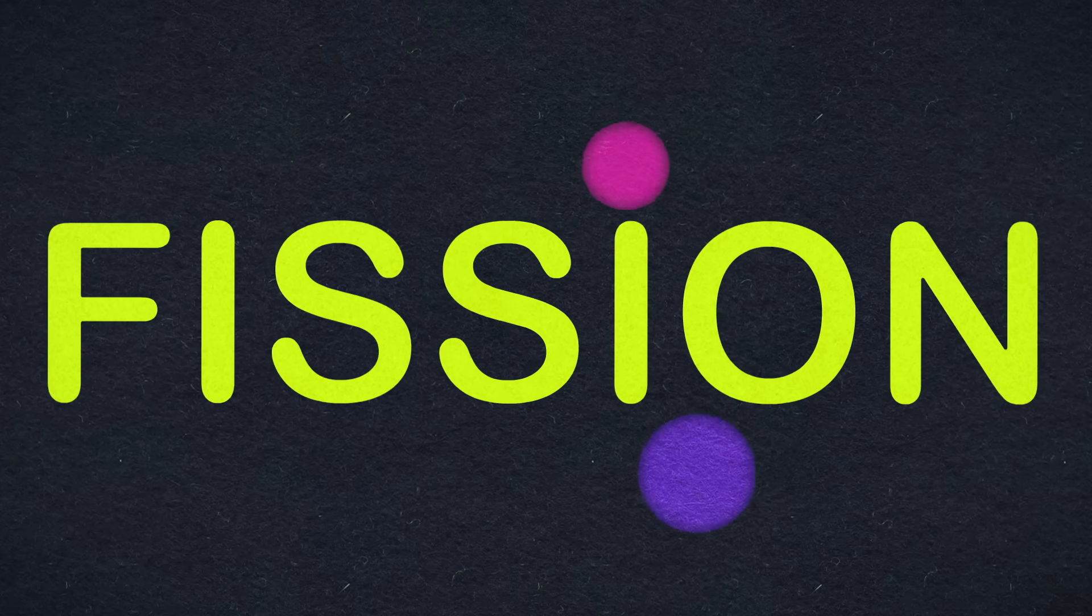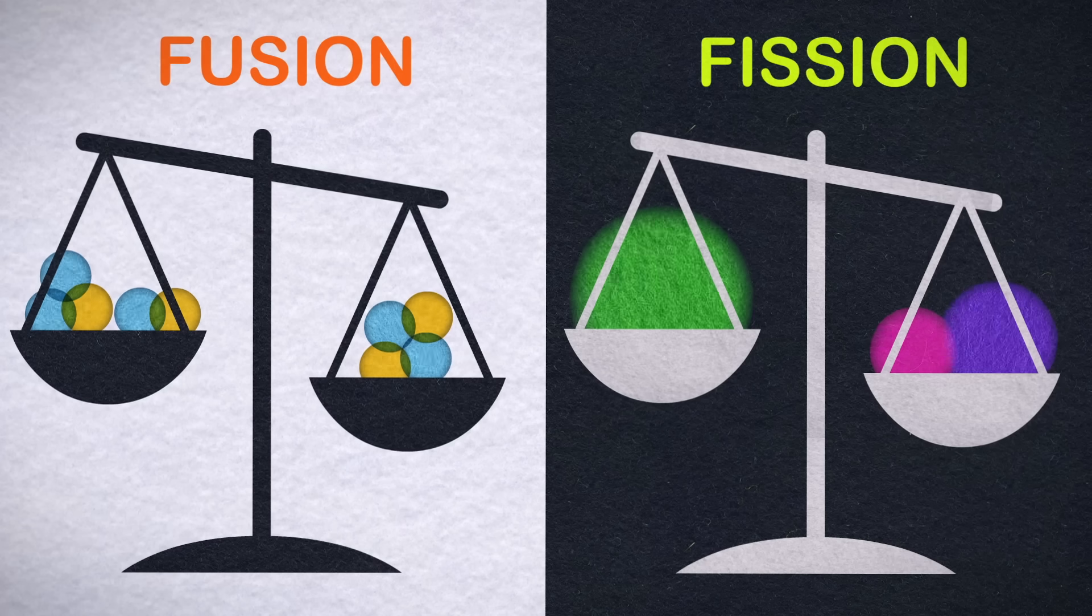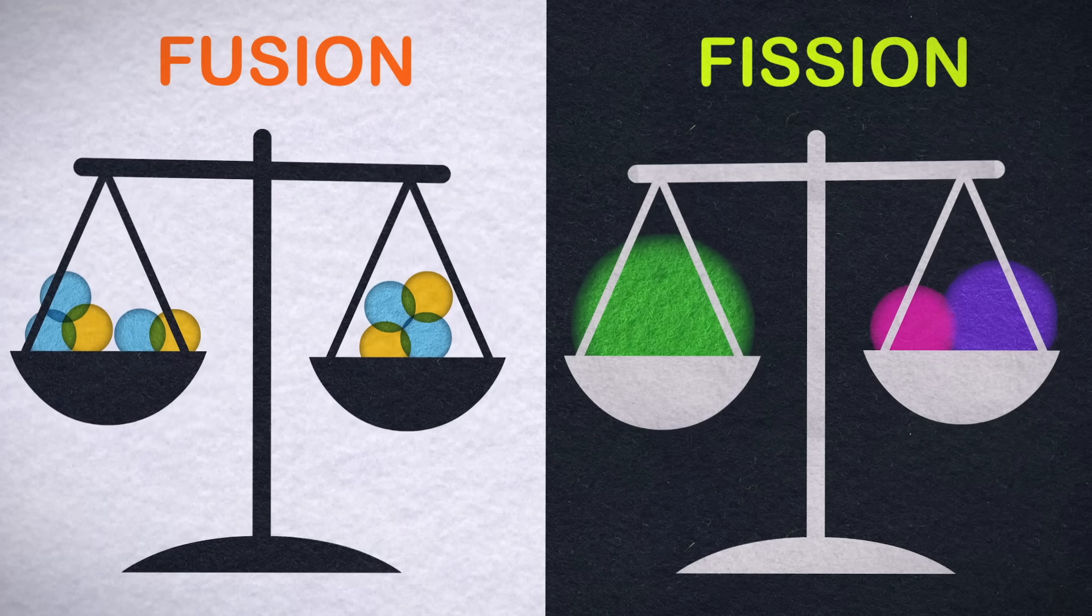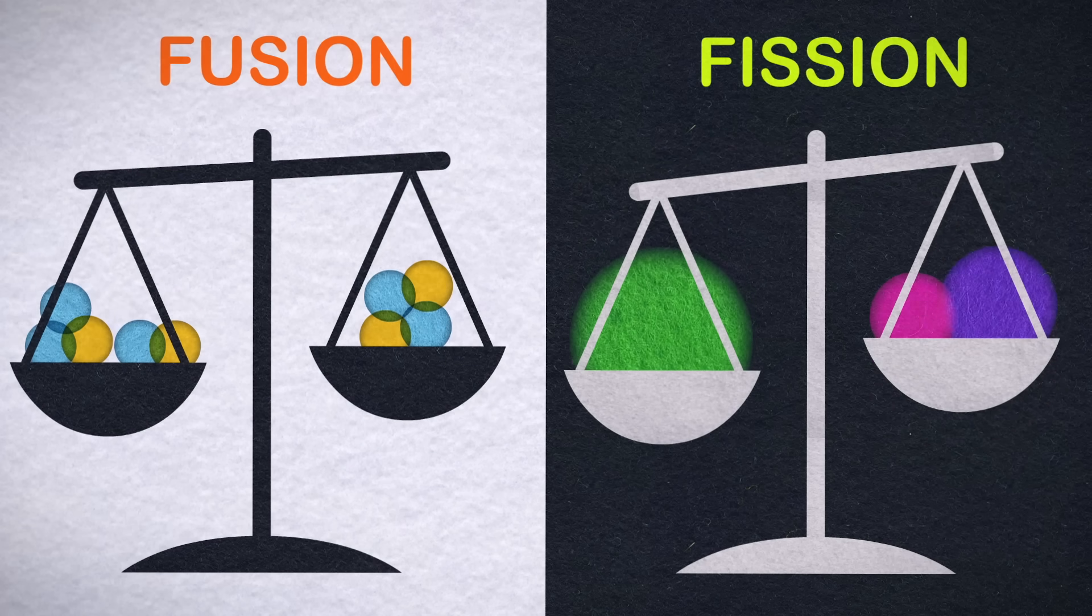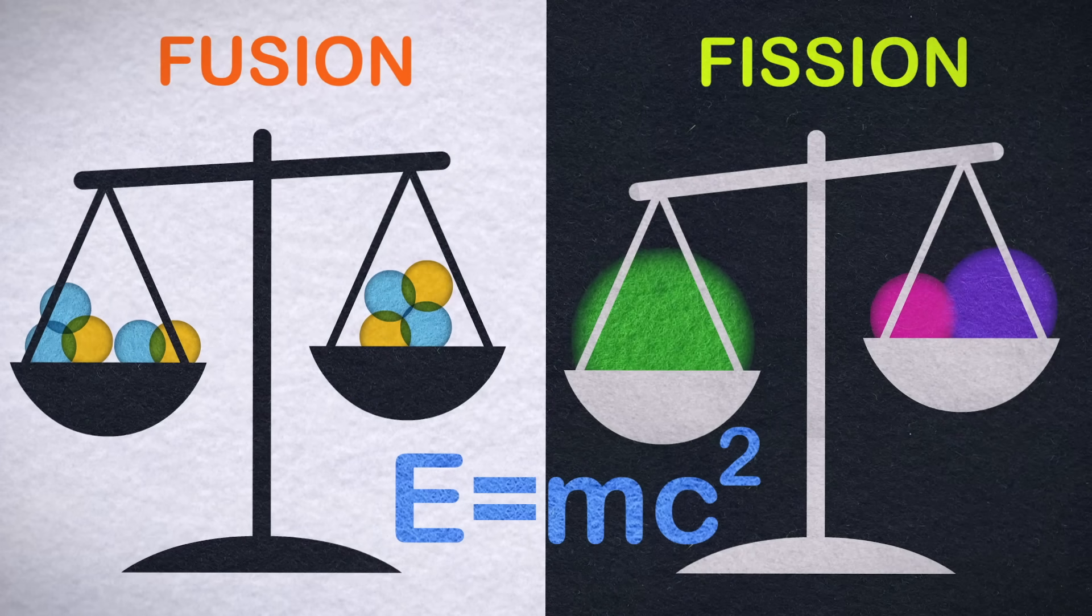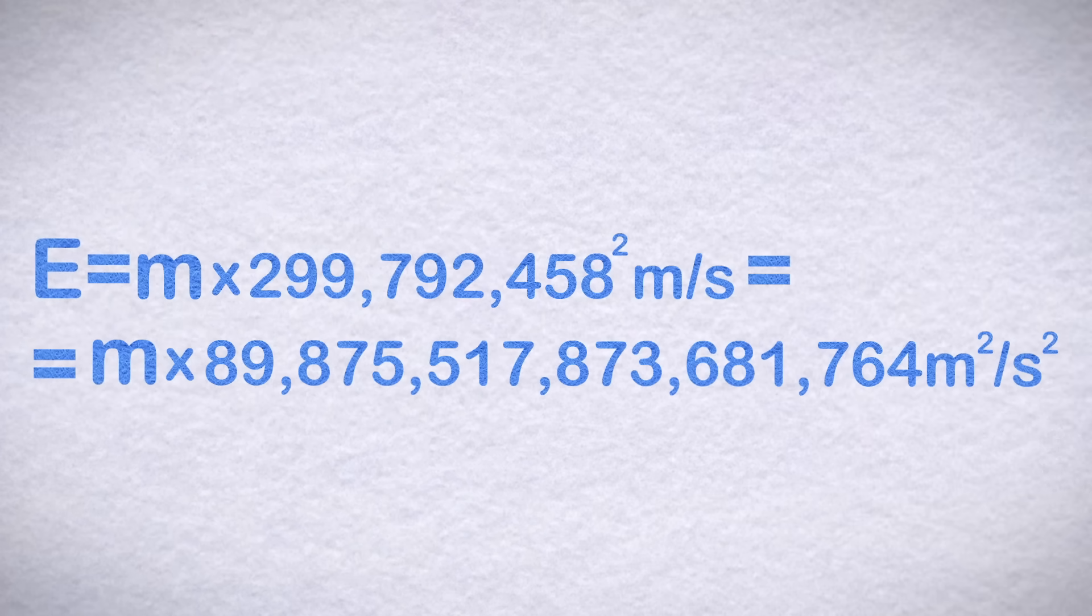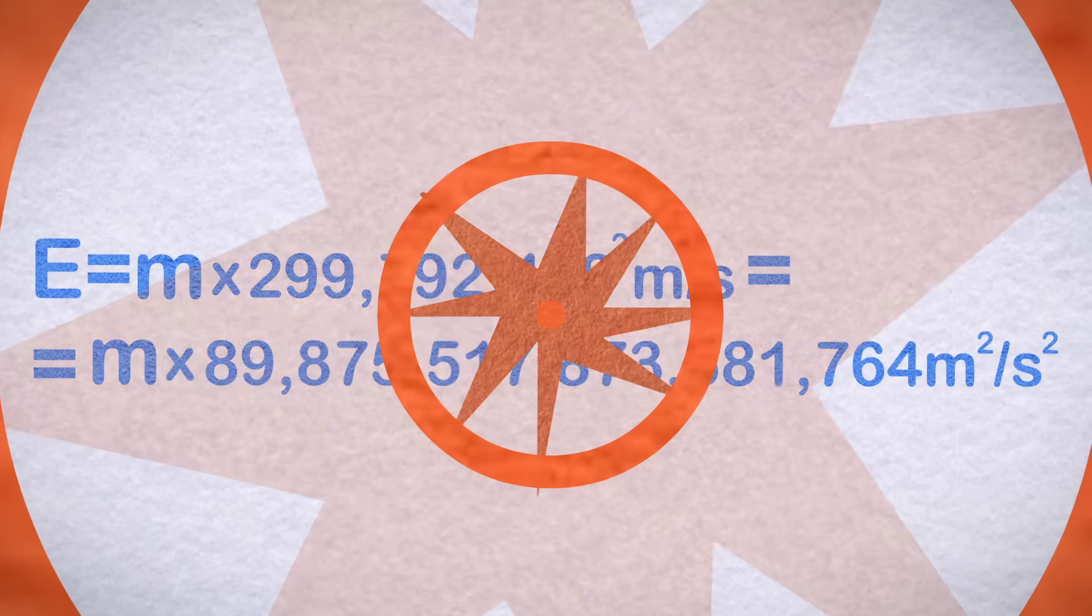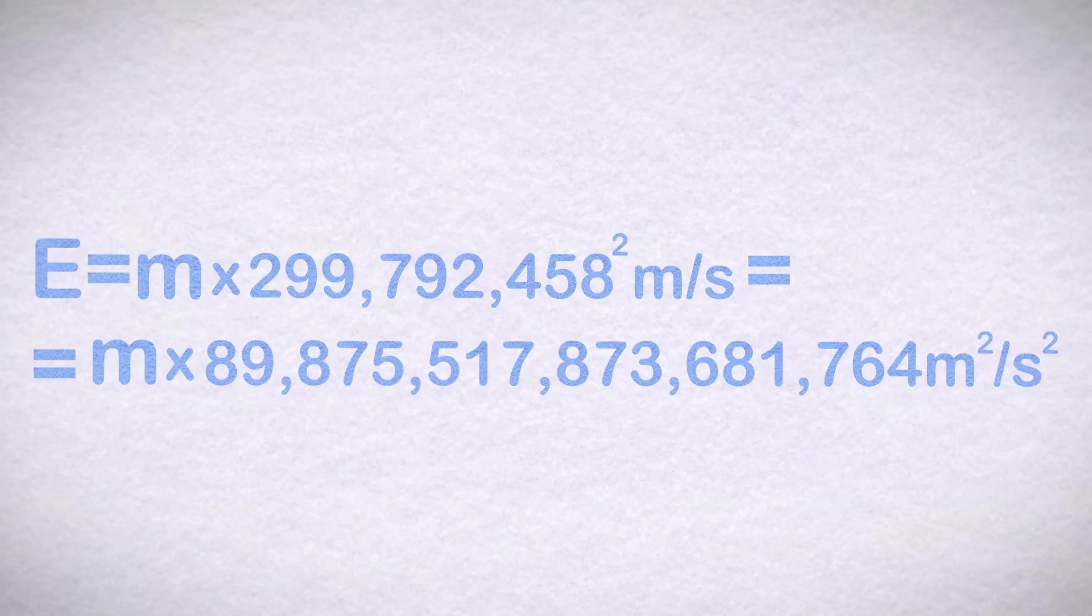The reverse process, where one atom splits into two, is called fission. In both processes, the mass of the end products is slightly less than the mass of the initial atoms. But that lost mass doesn't disappear. It's converted to energy according to Einstein's famous equation. And since c squared is such a massive number, both fission and fusion generate a lot of energy.